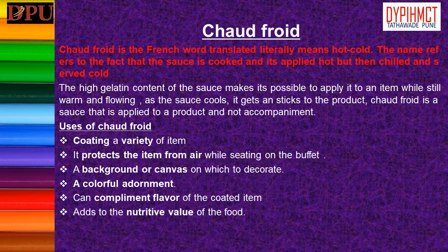Uses of chaud-froid: 1. Chaud-froid sauce is used for coating a variety of items including galantines, terrines, cold timbales, whole or individual joints of poultry, meat, whole or fillet of fish, and eggs. 2. It protects the item from air while sitting on the buffet. 3. The sauce acts as a background or canvas on which the food item is decorated. 4. With different colors, chaud-froid itself is an adornment. 5. The sauce can complement the flavor of the coated item. 6. It also adds to the nutritive value of the food.